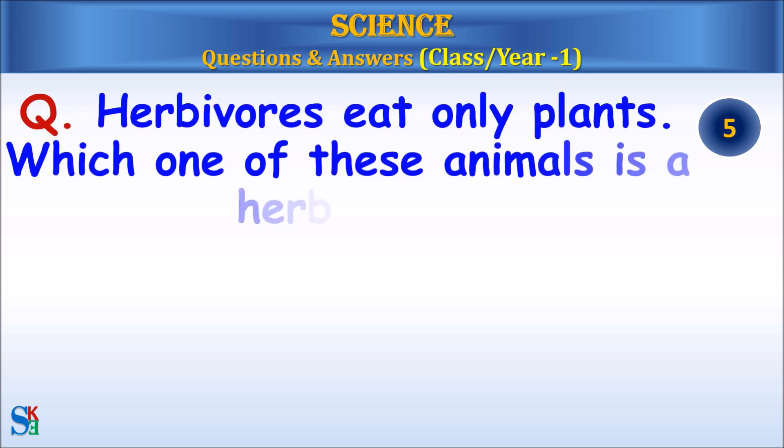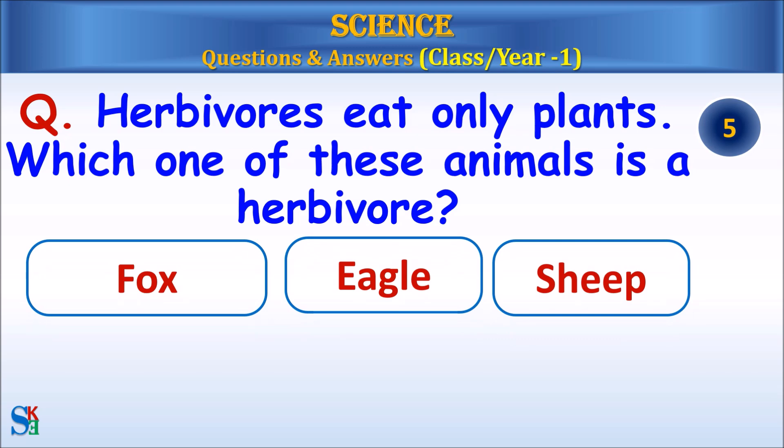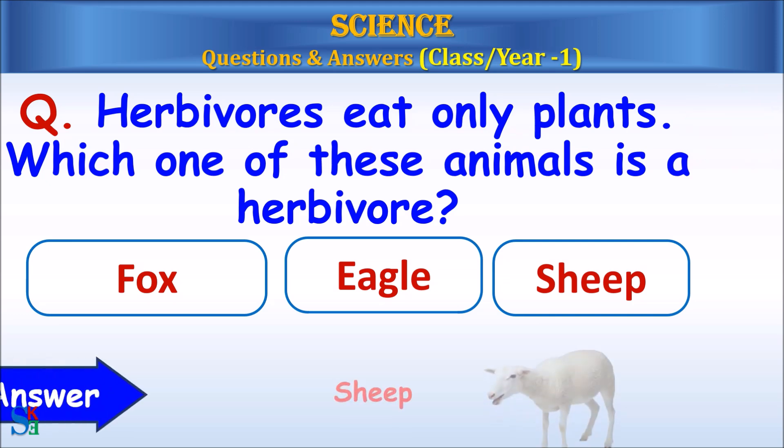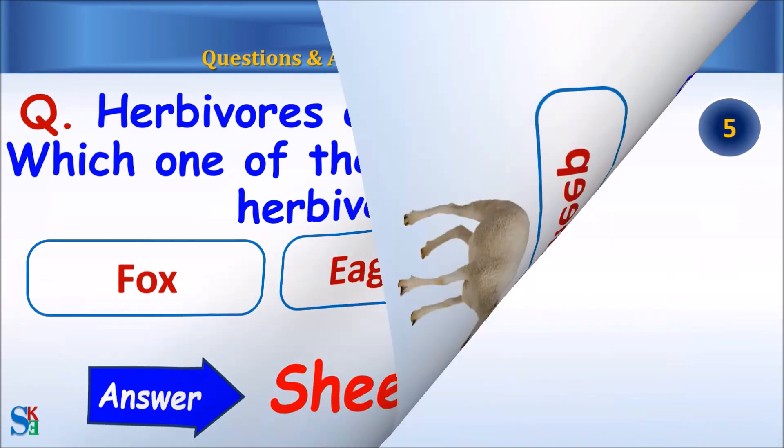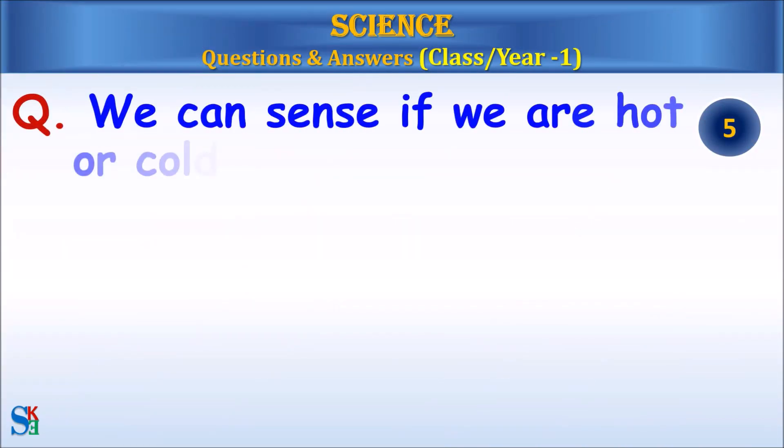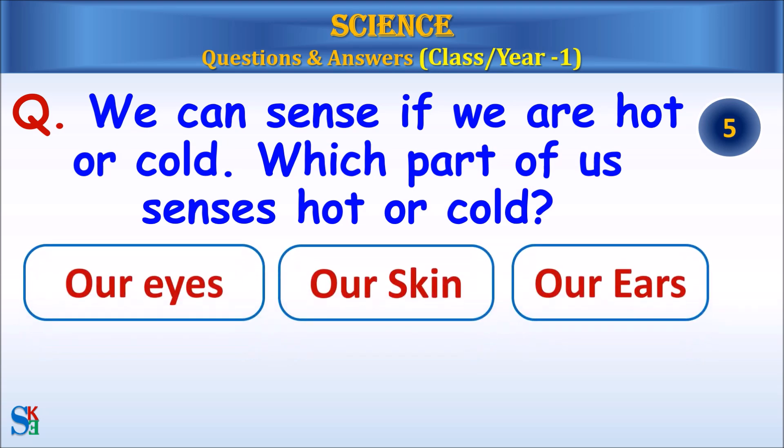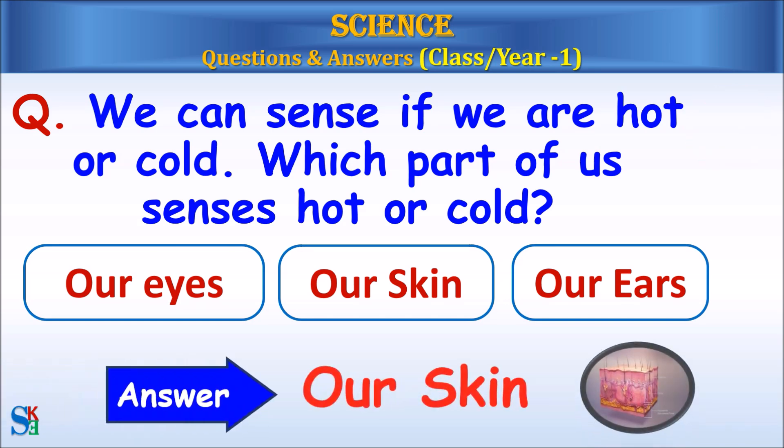Herbivores eat only plants. Which one of these animals is a herbivore, fox, eagle, or sheep? Answer: sheep. We can sense if we are hot or cold. Which part of us senses hot or cold, our eyes, our skin, or our ears? Answer: our skin.